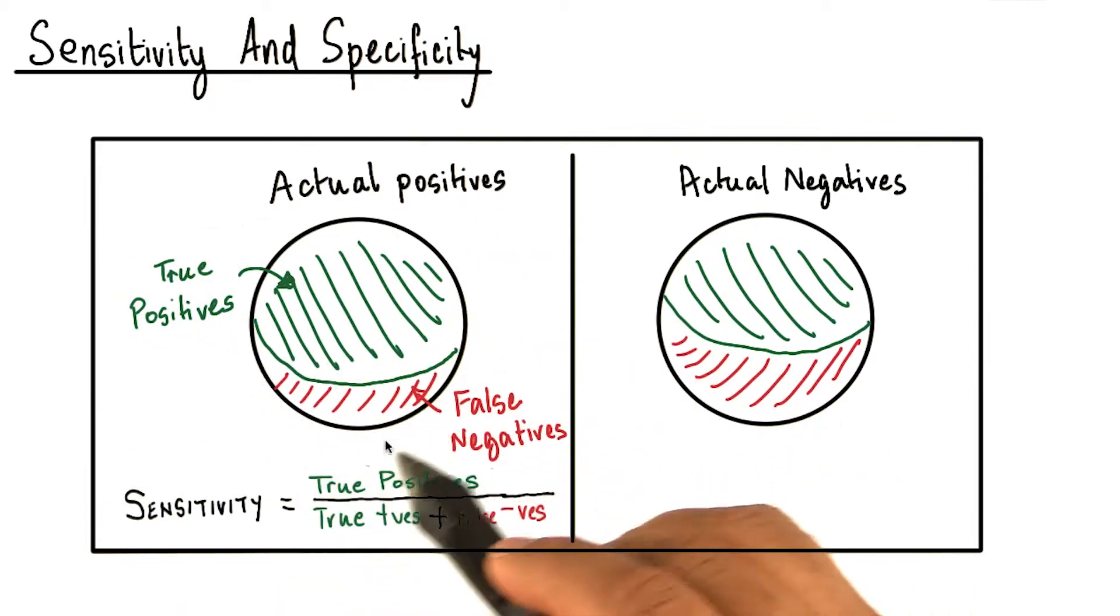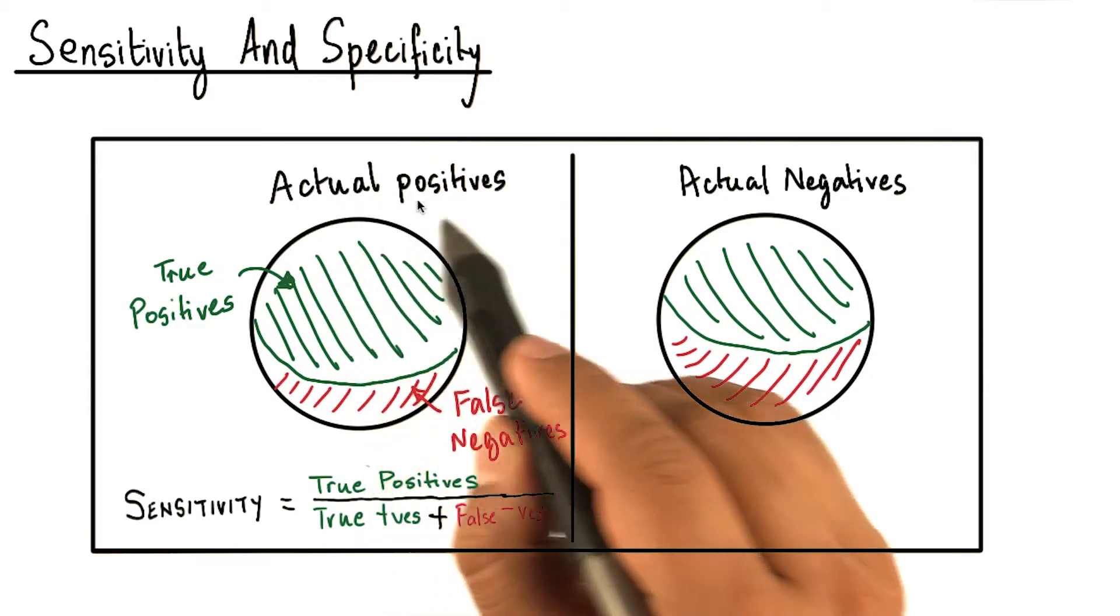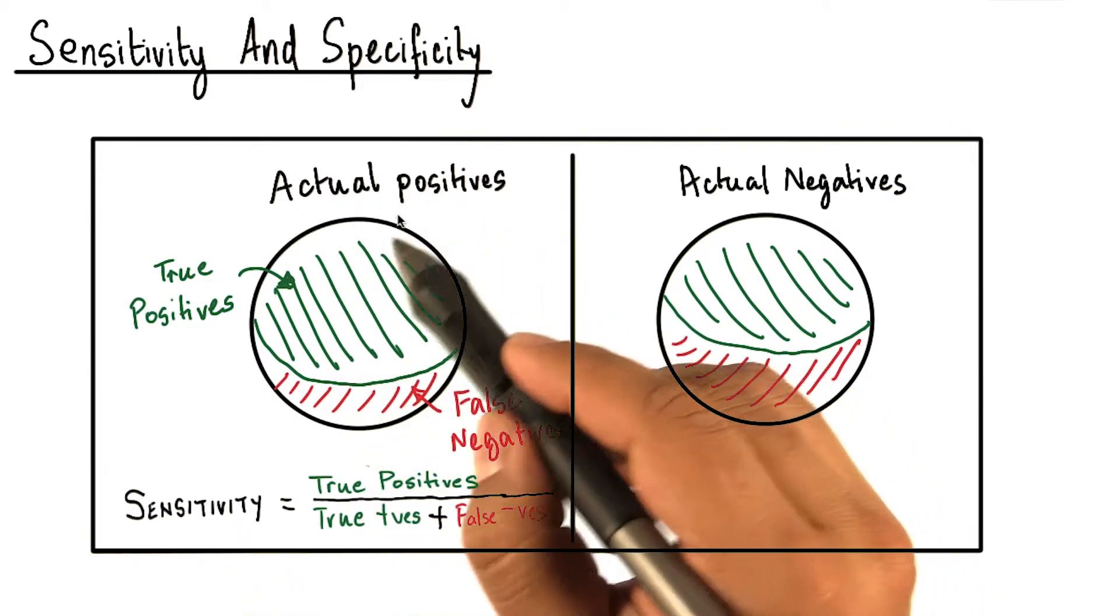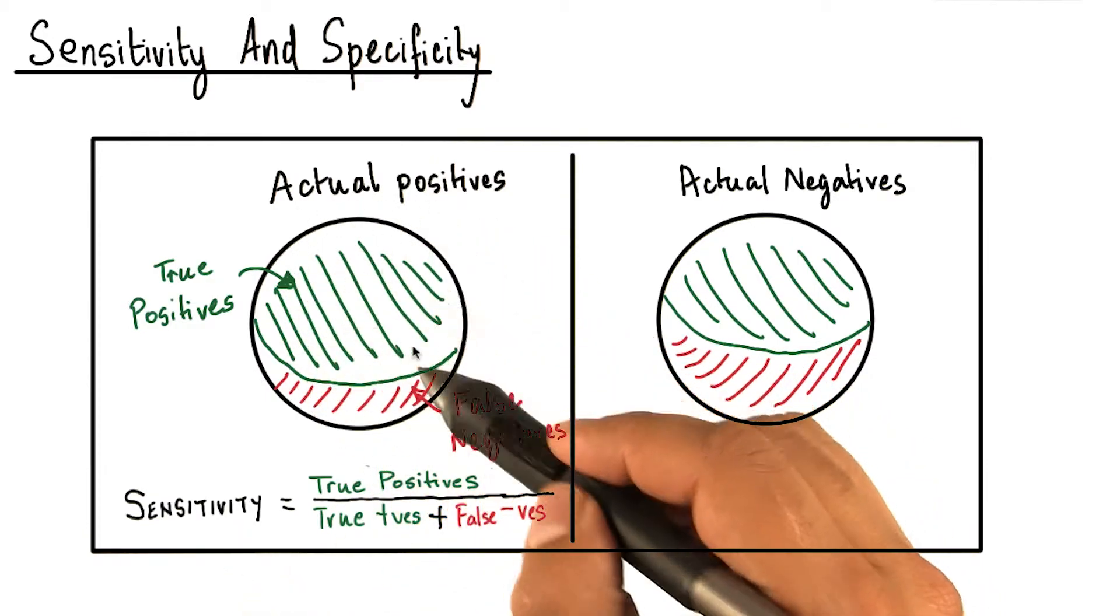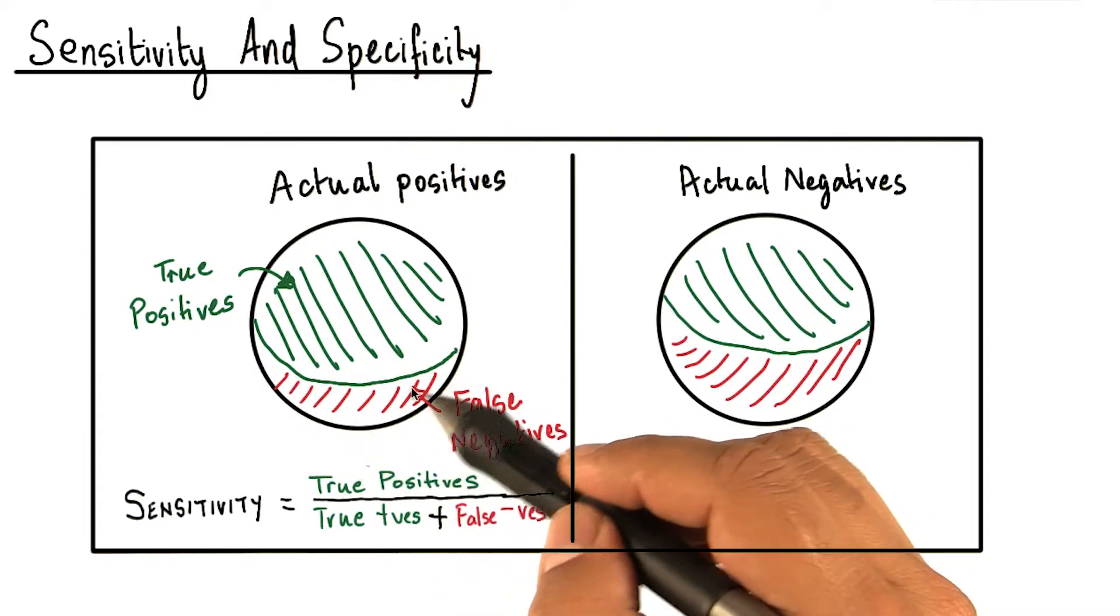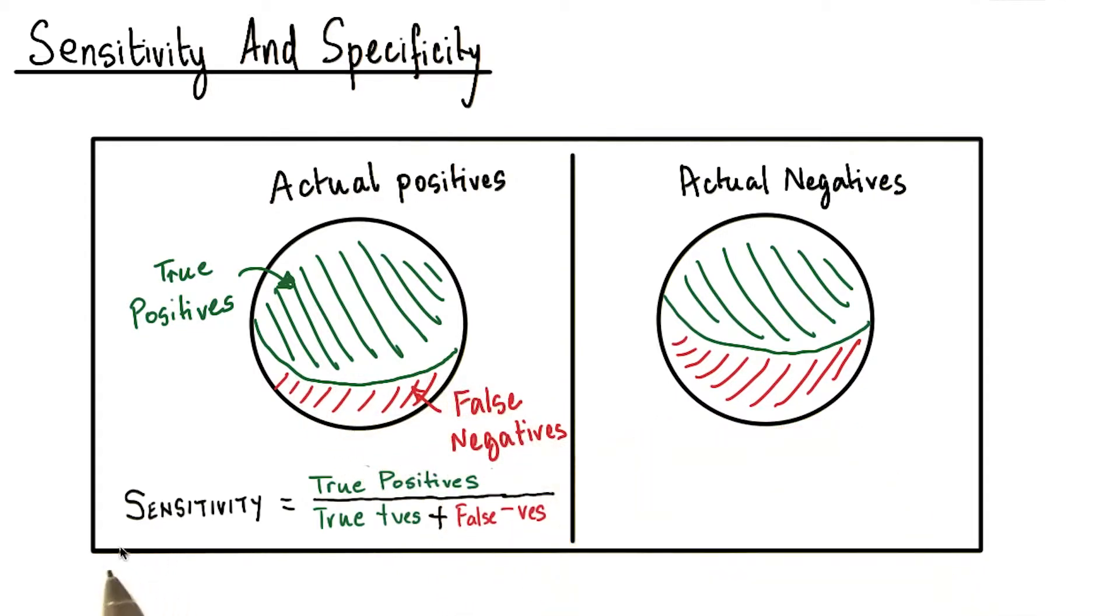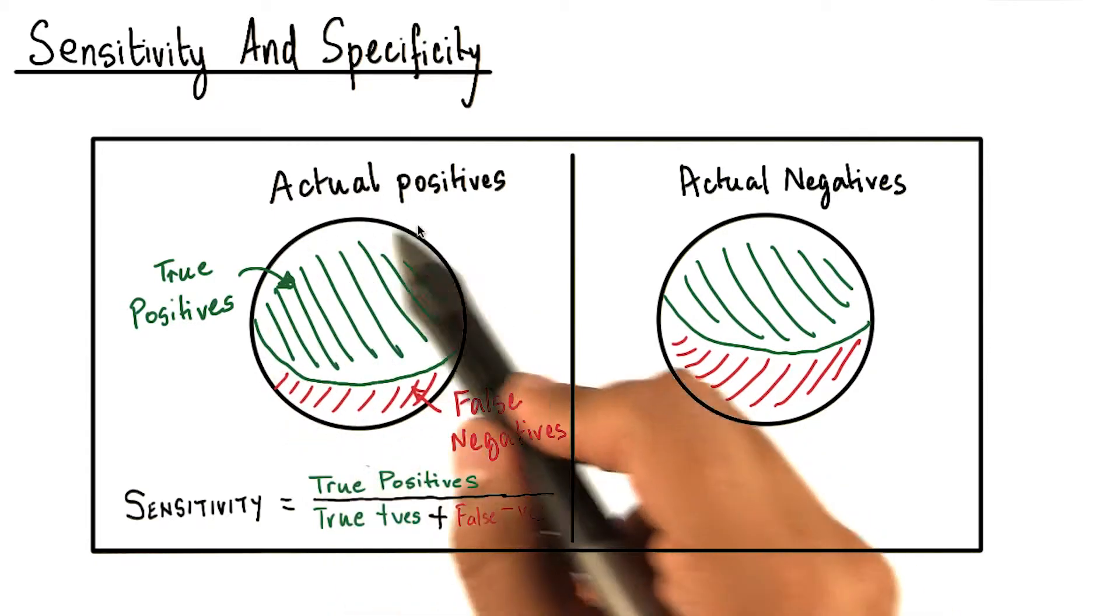In this case, the circle represents actual positives, which is in fact a sum of the true positives and the false negatives. The sensitivity is defined as the true positives divided by true positives plus the false negatives, which are all the actual positives.